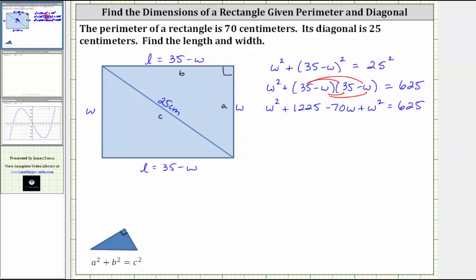Simplifying the left side of the equation, we have two like terms here, which gives us 2W squared minus 70W plus 1,225 equals 625. And now we subtract 625 on both sides, which gives us 2W squared minus 70W. 1,225 minus 625 is 600, so we have plus 600 equals zero.